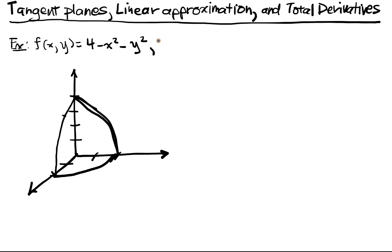And we can ask, what's a good approximation to this function at the point (1, 1)? So we consider x, y equals (1, 1). So at (1, 1), we have that f(1, 1) is equal to 4 minus 1 squared minus 1, is equal to 2.